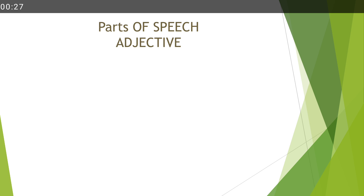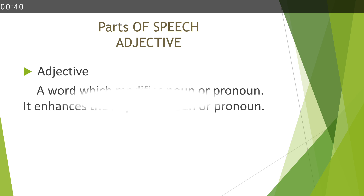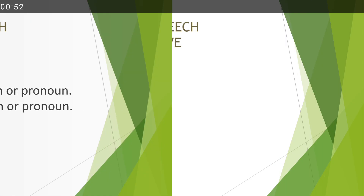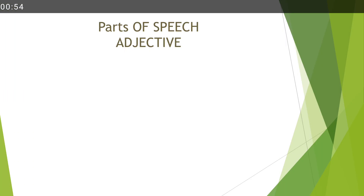The first part is noun, the second is pronoun, and the third is adjective. Then we discuss all the eight parts one by one. In this section we will discuss the adjective. What is the adjective? Adjective is a word which modifies noun and pronoun. It enhances the impact of noun and pronoun. This is the word which can modify the noun and pronoun and their qualities.